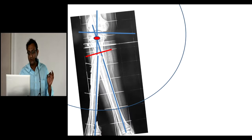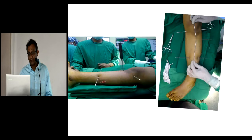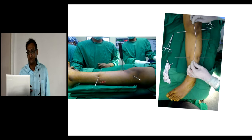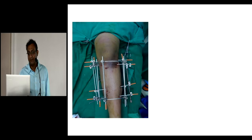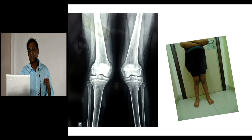A few more cases — tibia vara in a 13-year-old where growth modulation cannot be done. The deformity planning here uses simple PowerPoint methods, no special software, and is executed on the table. A fibular osteotomy is done with two wires: one parallel to the knee joint and one perpendicular to the tibia, placed in different rotations to also correct the intorsion of the tibia in the same frame. A delta frame — a very simple, lightweight frame — is used to correct this deformity percutaneously.